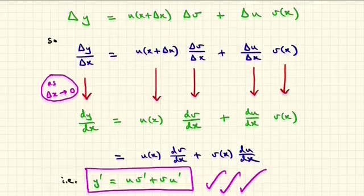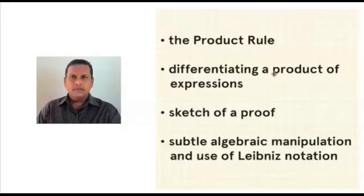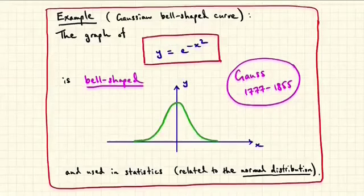So far I have introduced and illustrated the product rule, which enables you to differentiate a product of expressions in terms of the derivatives of the factors. We then sketched a proof involving subtle algebraic manipulation and the limit definition of the derivative using Leibniz notation. Now let us apply the product rule to further explore the behavior of the Gaussian curve y equals e to the minus x squared, using the second derivative.